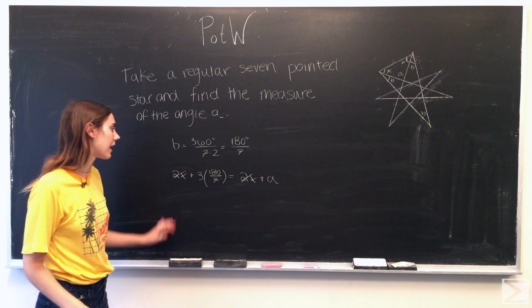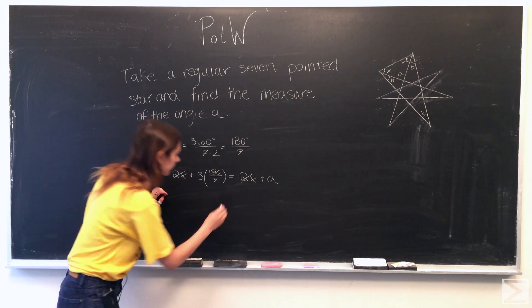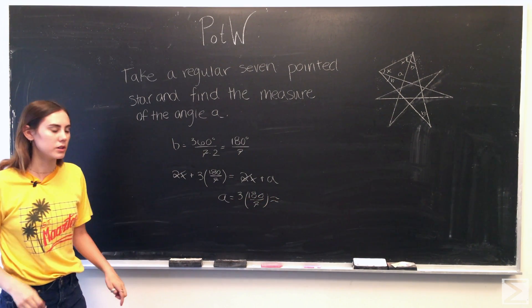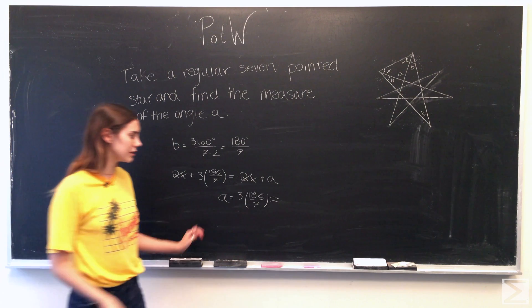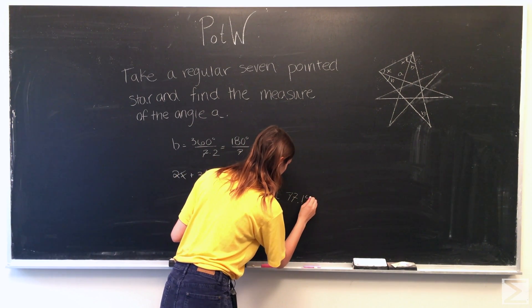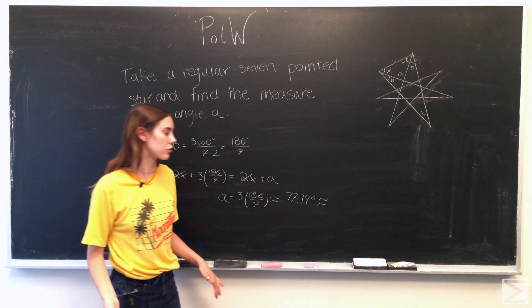And we find that A is equal to 3 times 180 over 7, which is about 77.14 degrees. So A is about 77 degrees.